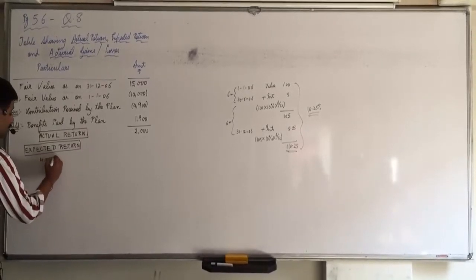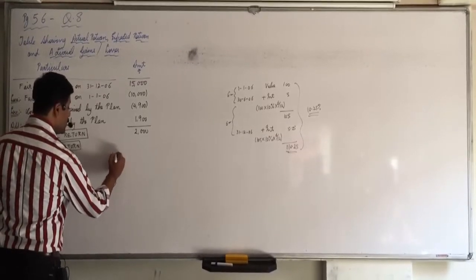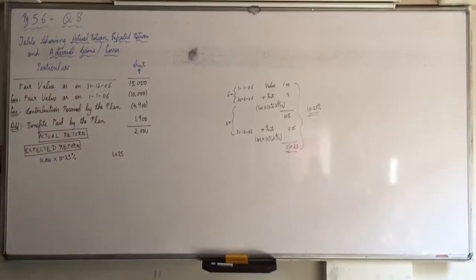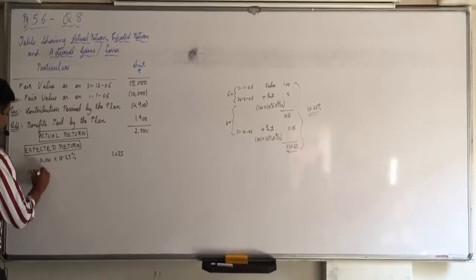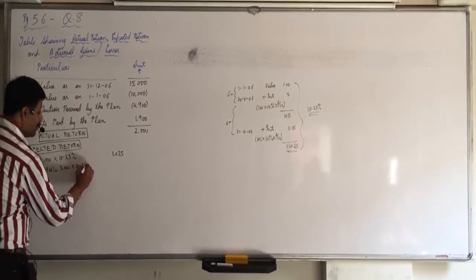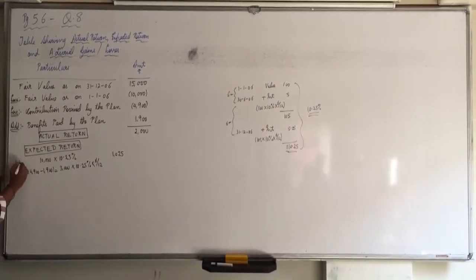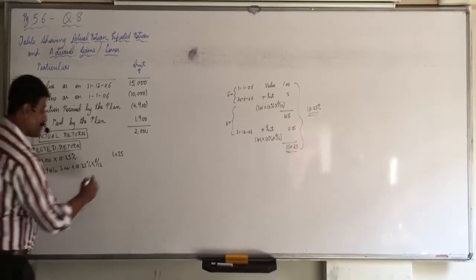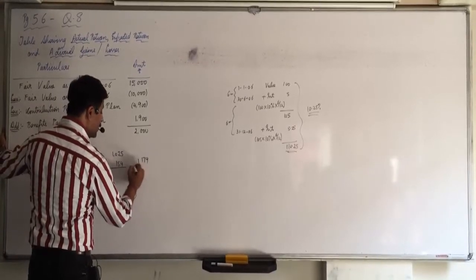So split up: 10,000 into 10.25% equals 1025. And 4900 minus 1900 that is 3000 into 10.25% into 6 by 12. This 10,000 is on 1-1-06 and this is on 30-6. So here we are counting it for 6 months. What does that come to? 154. So 1179 is the expected return.